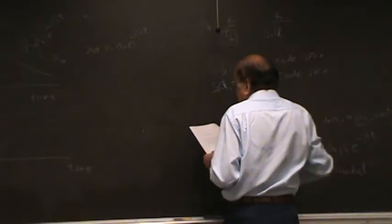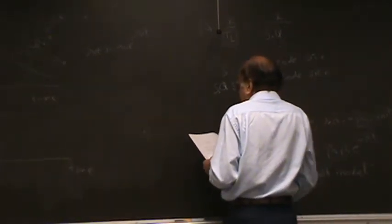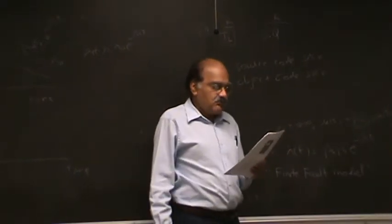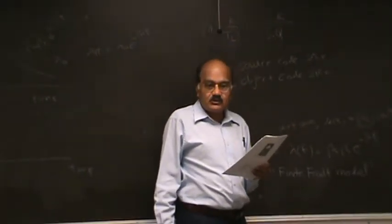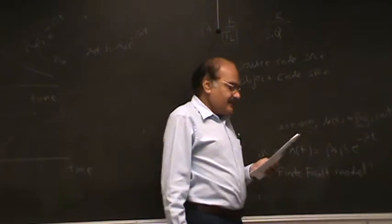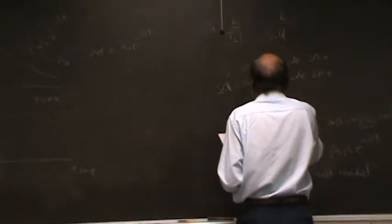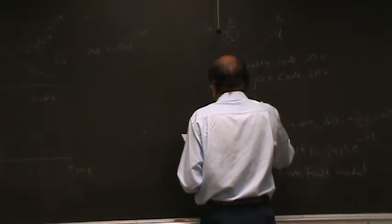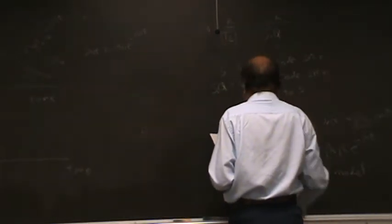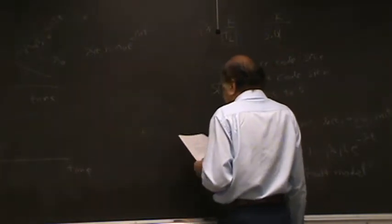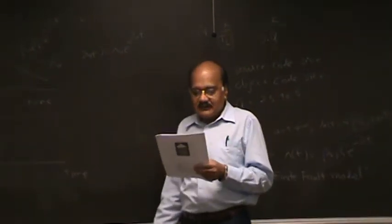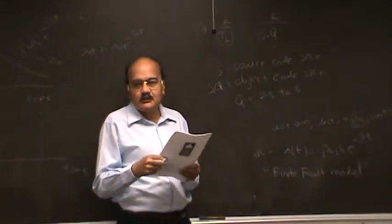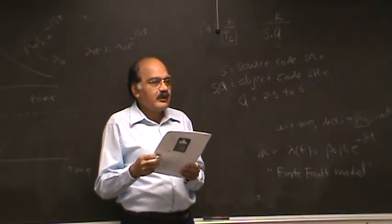Q is referred to as the ratio of number of object instructions per source instruction. Your Q is somewhere between 2.5 to 6 and you should look this up in the reliability handbook. There's a reliability handbook available on the course webpage.